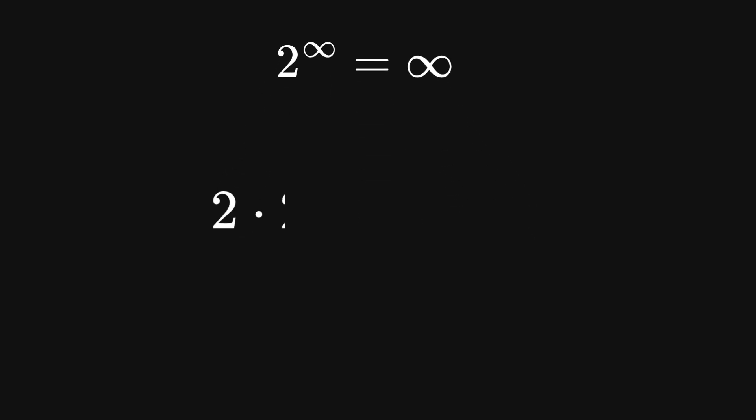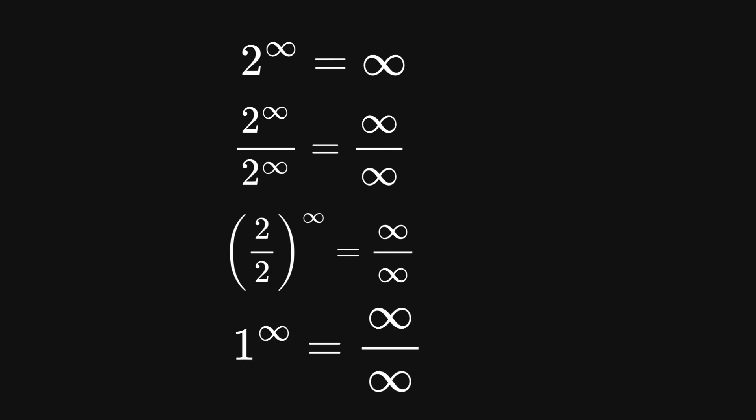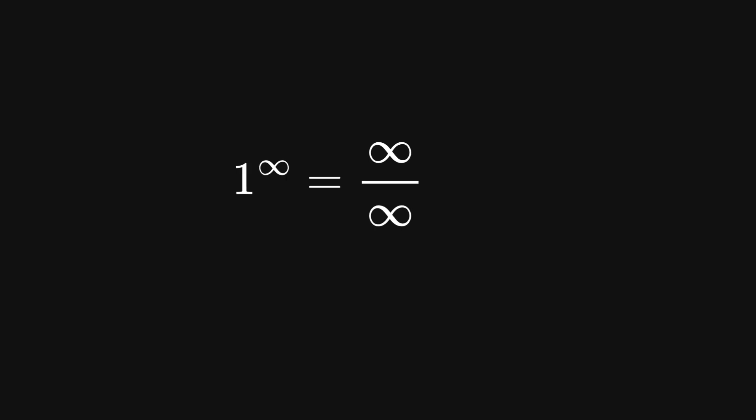What about 1 raised to the power of infinity? That seems easy: 1 times 1 times 1, infinitely many times — the answer has to be 1, right? But mathematics has a surprise: this is actually another indeterminacy. Consider that 2 raised to the power of infinity equals infinity, since 2 times 2 times 2 going on forever shoots up to infinity. So 2 to the infinity divided by 2 to the infinity equals infinity divided by infinity. The left side can be rewritten as 2 divided by 2, all raised to the power of infinity, which is 1 raised to the power of infinity. Since infinity divided by infinity is an indeterminacy, 1 raised to the power of infinity is also a mathematical indeterminacy.